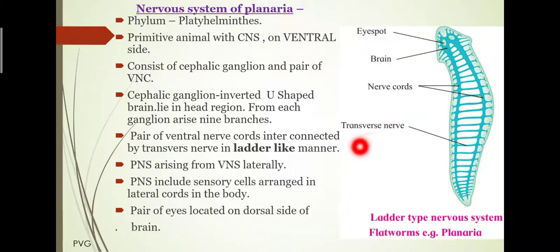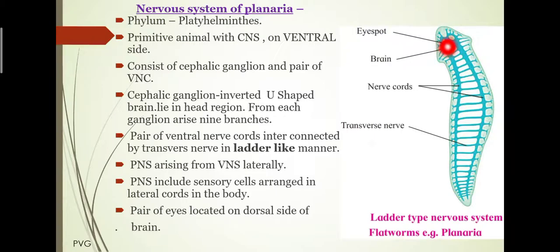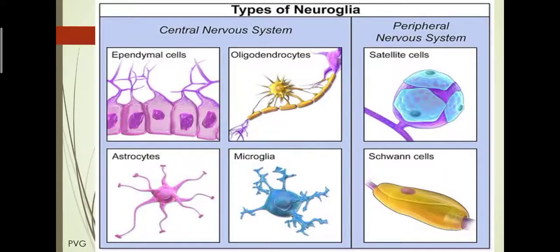The peripheral nervous system or peripheral nerve plexus arises laterally from the ventral nerve cord. It includes sensory cells arranged in lateral cords in the body. There is also the presence of a pair of eyes on the dorsal side of the brain.